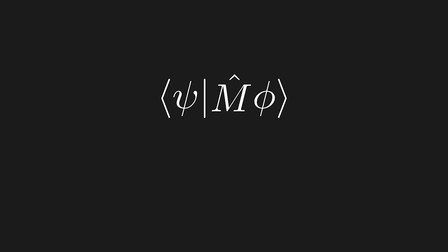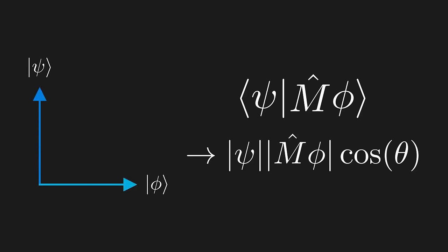Remember that we have the following equivalent expression for the dot product. So geometrically, this inner product basically says, act M on phi, and then measure the new angle between the new vector and psi, scaled by their lengths.